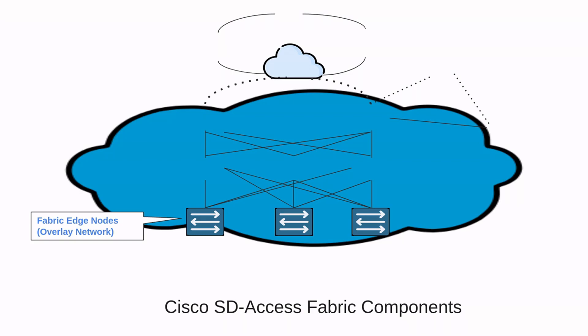This overlay network is also called the SD Access Fabric, and it provides policy-based network segmentation, host mobility for wired and wireless hosts, and enhanced security beyond the normal switching and routing capabilities of traditional networks. This overlay fabric is run by VXLAN, which is the tunneling technology used for the fabric data plane, based on the Virtual Extensible LAN. VXLAN is used because it is capable of running Layer 2 and also Layer 3.